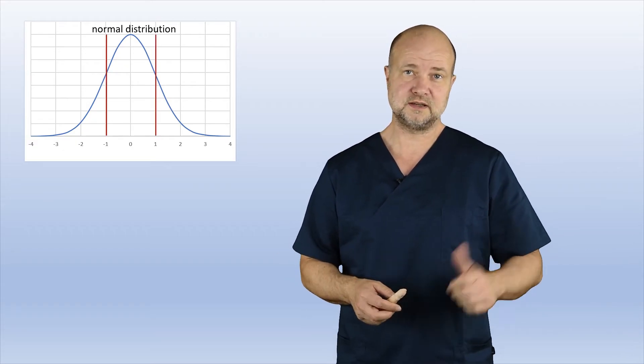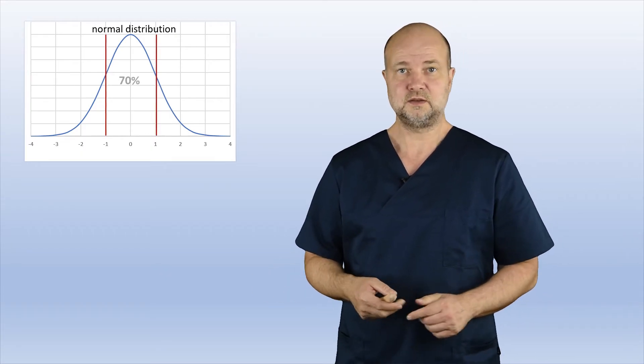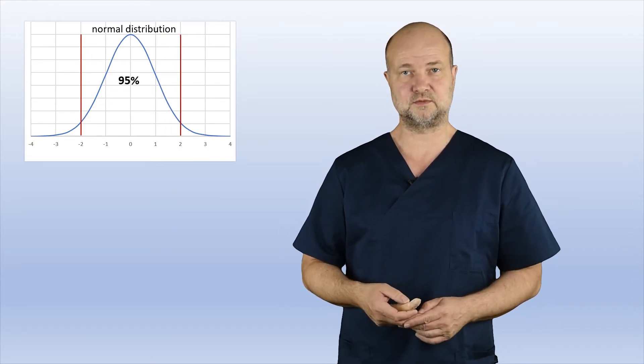So you will find roughly 70% of all the men distributed within those limits. If you take two standard deviations, you will cover about 95% of all the men. So what is micropenis?